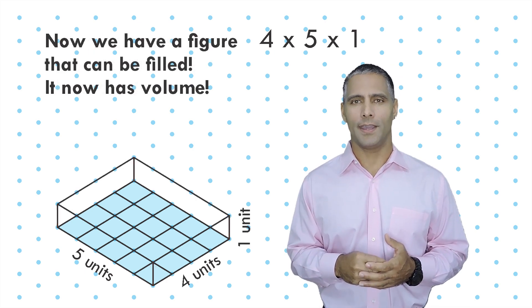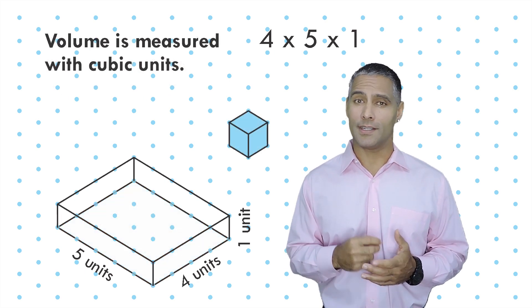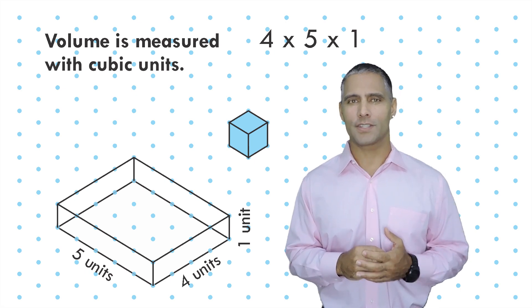Okay, now we have a 5 by 4 by 1 rectangular prism. The number of cubic units it takes to pack or fill a container is the volume of that geometric solid.